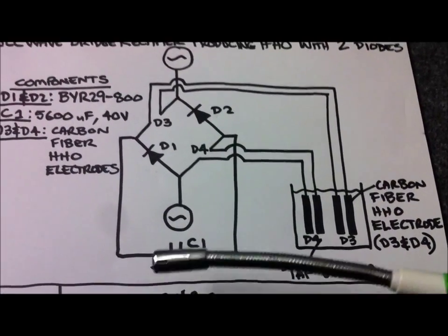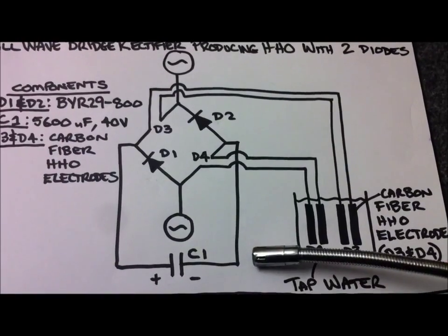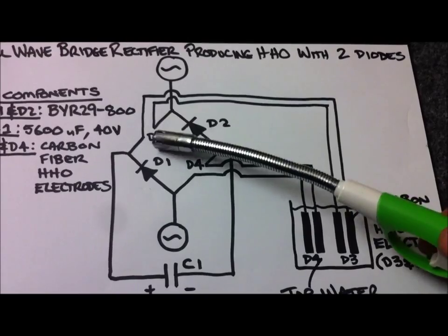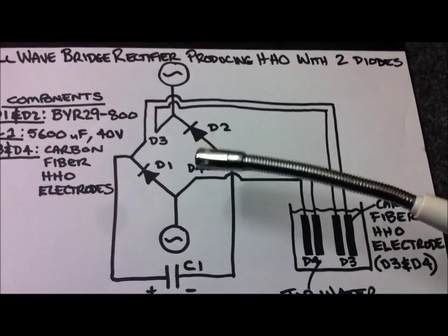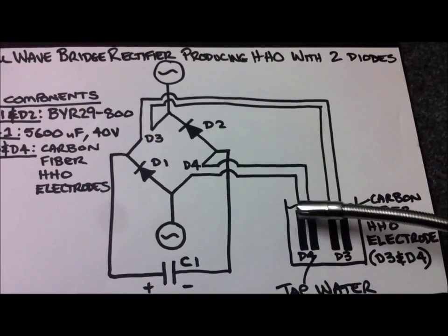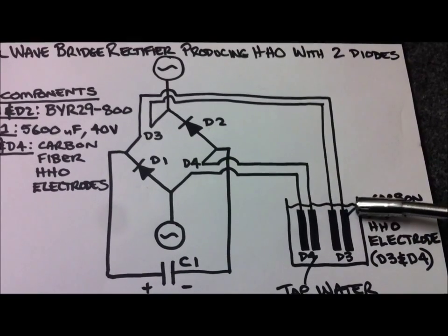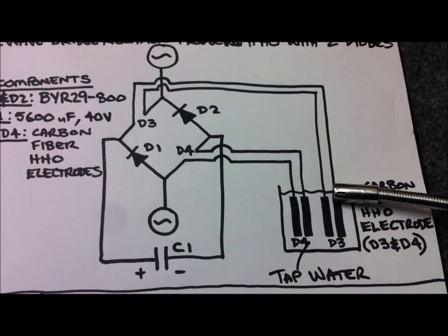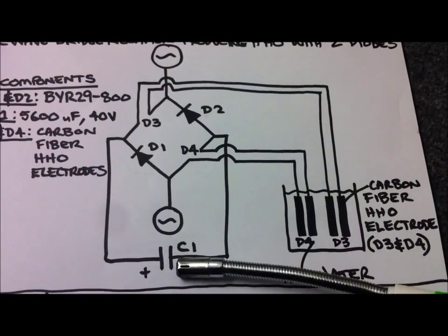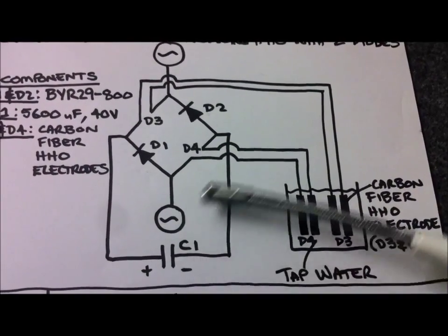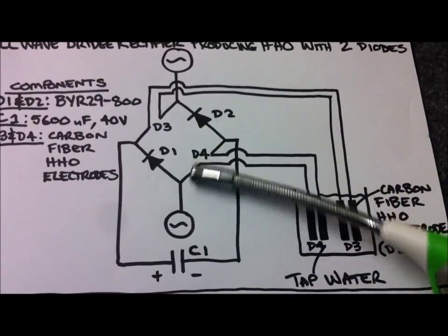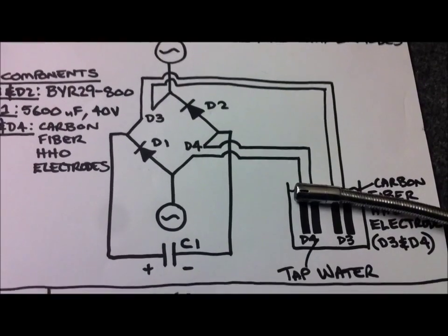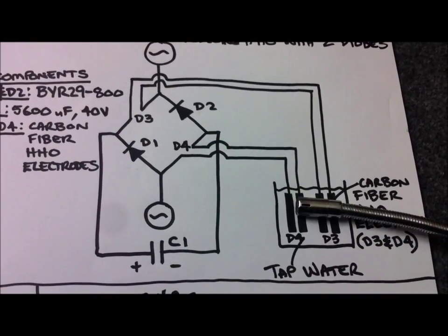So I removed the load. We left C1 on there because the voltage drop across D3 and D4 was high enough to produce a bit of a reduction in HHO. So I found that leaving C1 on there kept the voltage in the rectifier at 12 volts and counteracted that voltage drop which helped us to maintain our HHO production rate.